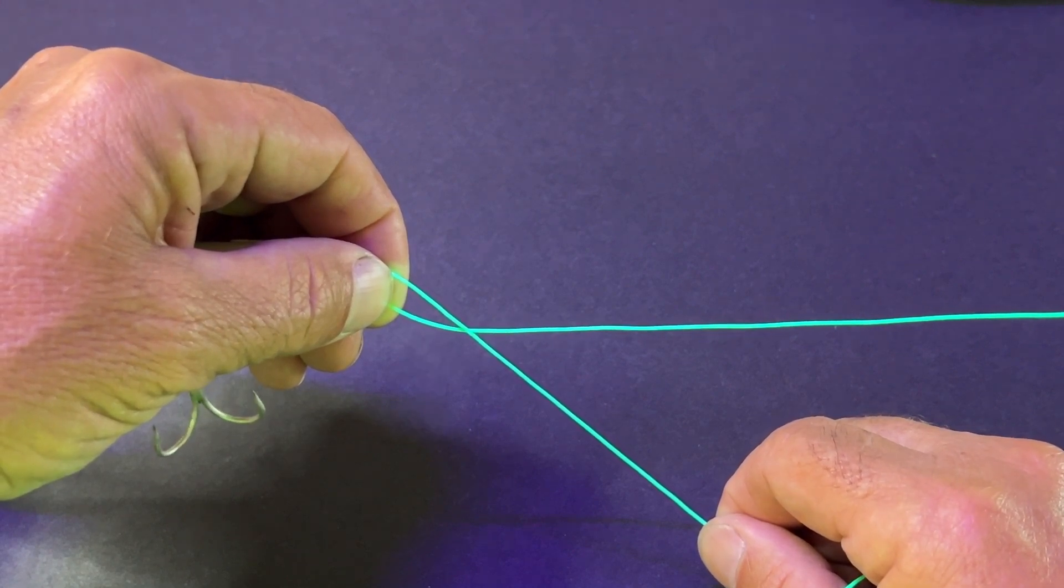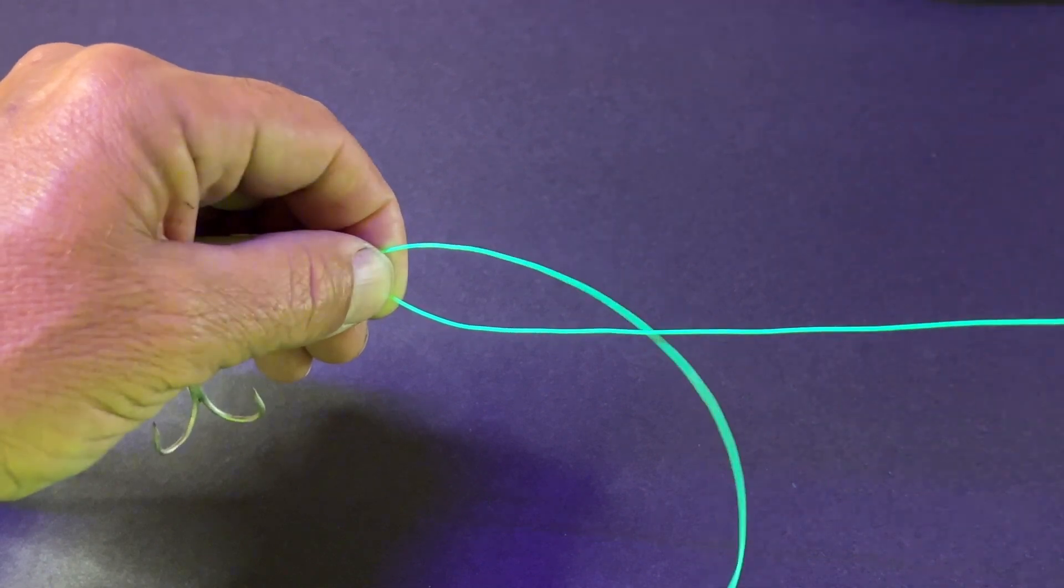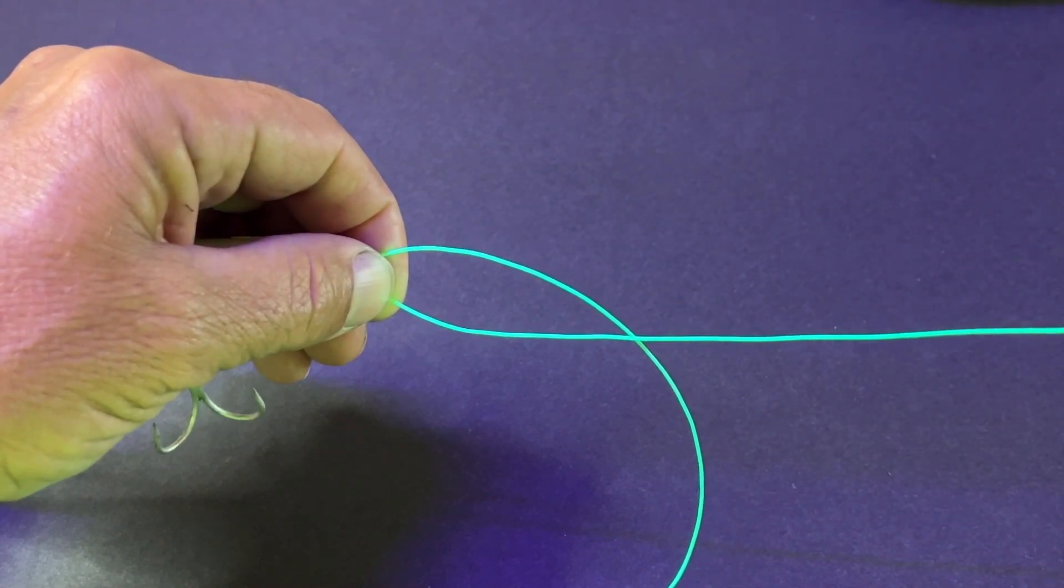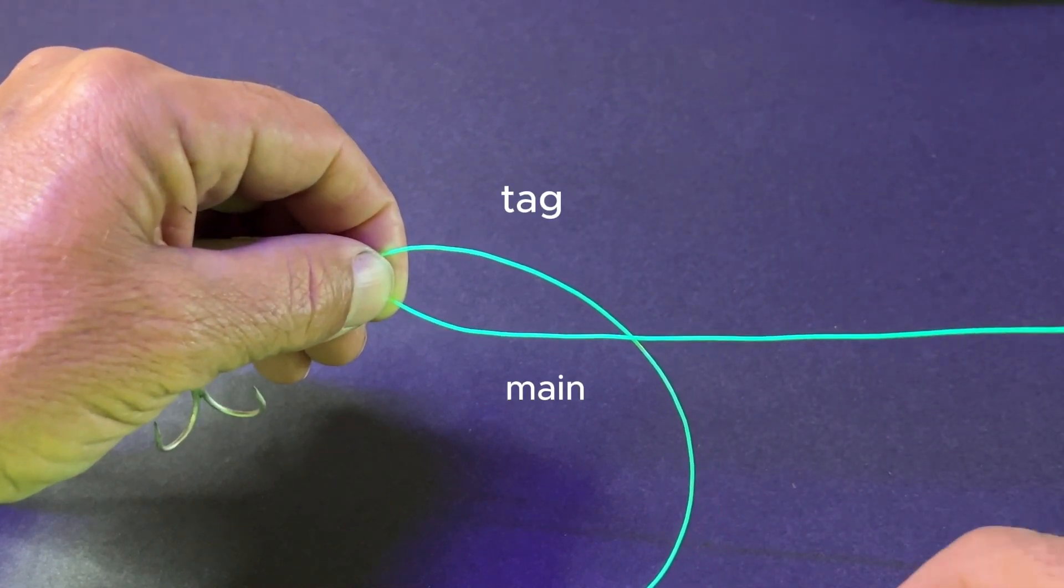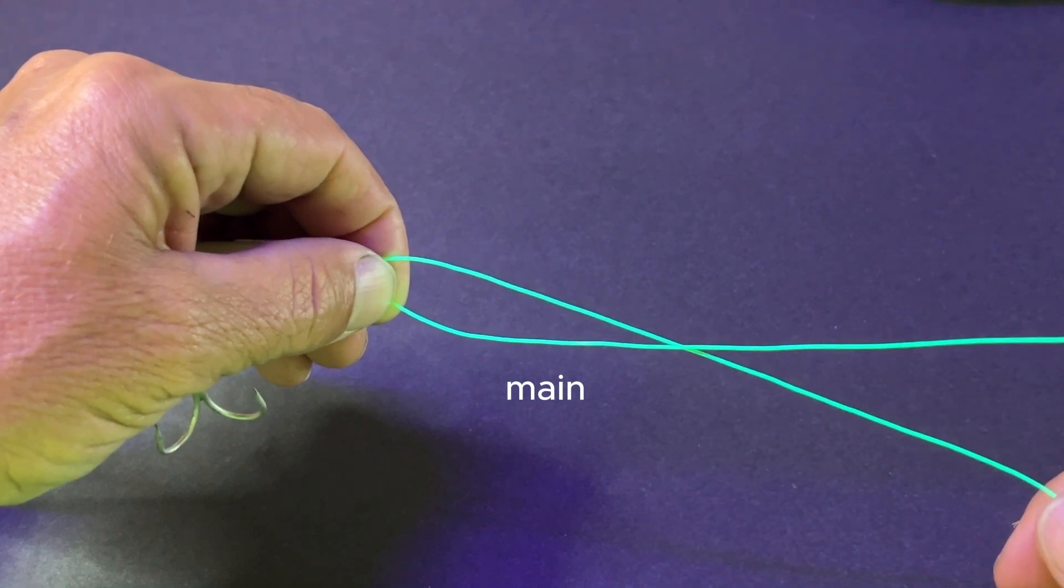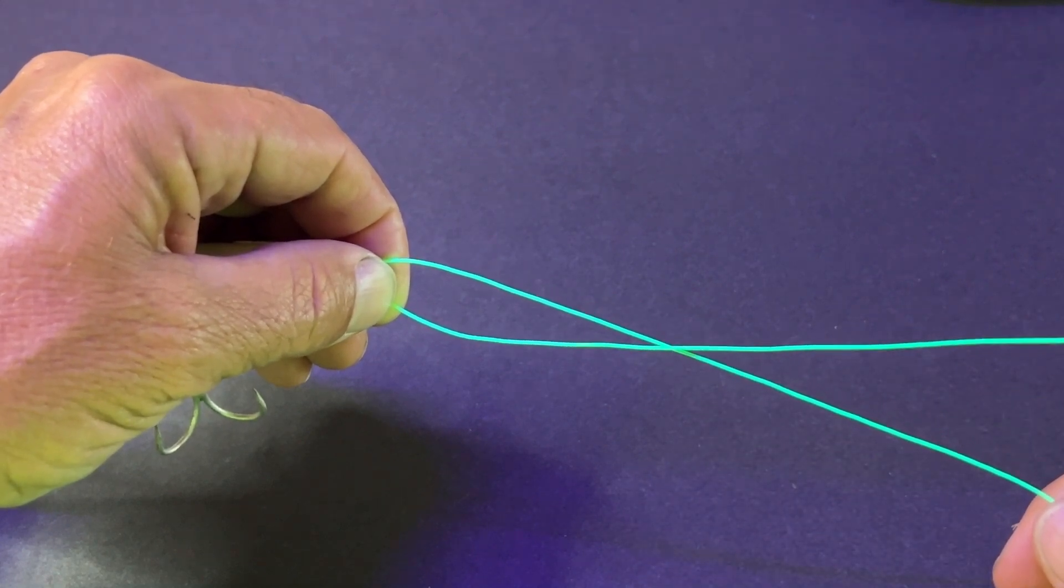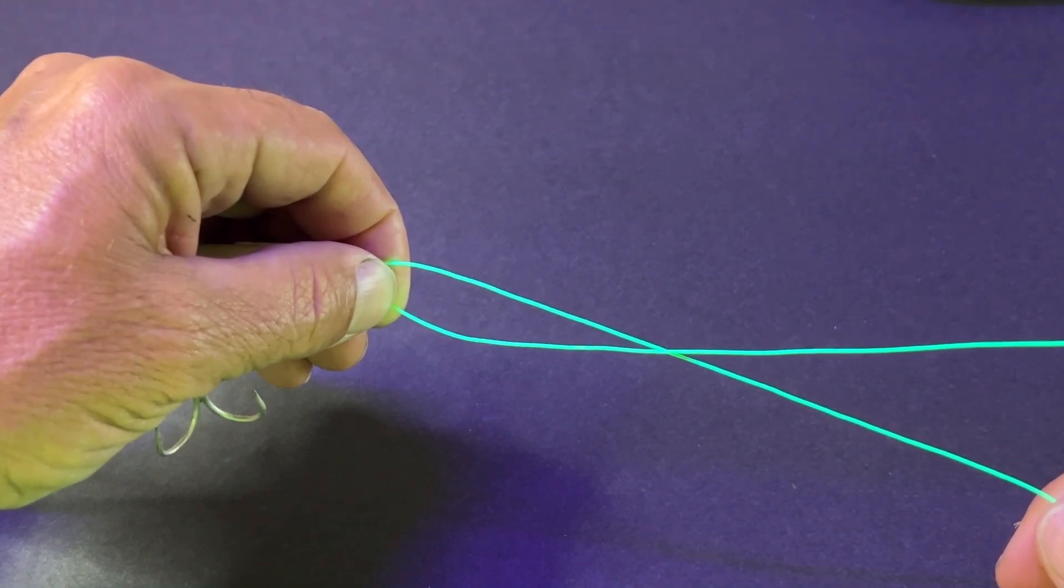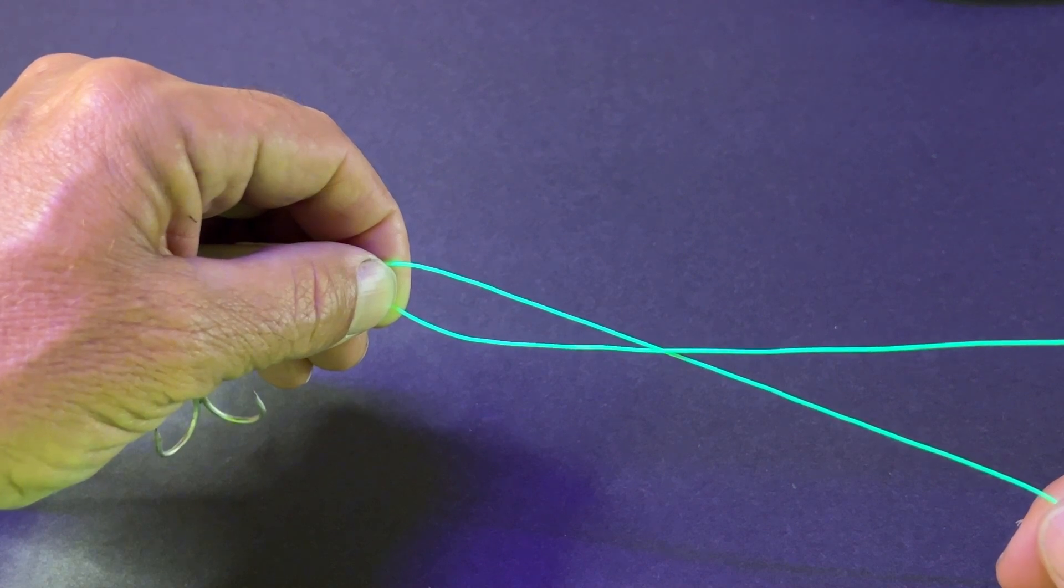So now we're going to wrap the tagline around the main line. This is bigger line, so I'm going to do five times. If you have smaller fishing line or braided fishing line, you're going to do seven plus.